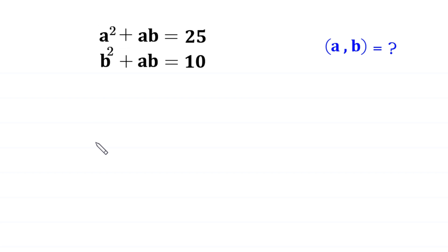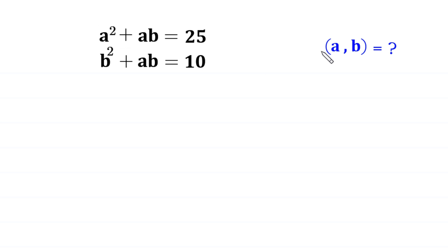Hello everyone, you are welcome to how to solve this very nice system of equations. a squared plus ab is equal to 25, and b squared plus ab is equal to 10. We need to find all possible values of a and b.